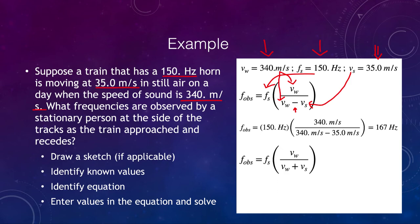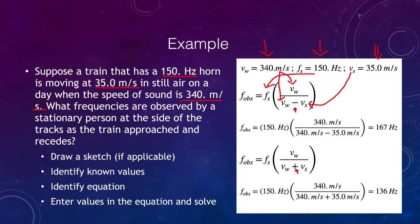We can also calculate for recession. When moving away, using the same equation but with the positive sign for the moving source, it should be a longer wavelength and a lower frequency. So the wavelength will increase and the frequency will decrease, going from 150 Hz down to 136 Hz.